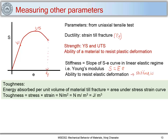There is another parameter called toughness, which is the energy absorbed per unit volume of a material till fracture, and it can be given as the area under the stress-strain curve. This area identifies the toughness of a material. More the area, tougher the material. As stated, it is the area under the stress-strain curve.